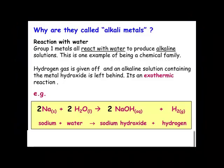Let's find out why the Group 1 metals are called alkali metals. The reason is that when a Group 1 metal reacts with water, it produces an alkali solution. For example, sodium reacts with water to produce sodium hydroxide and hydrogen gas — sodium hydroxide is the alkali. This can be tested by adding an indicator, for example a universal indicator, and we will see a purple, dark blue colour being produced.